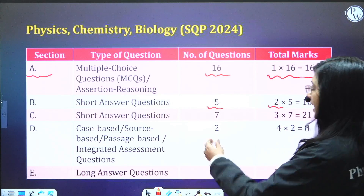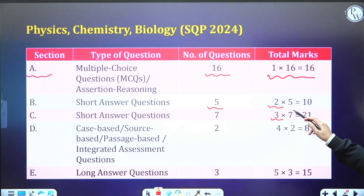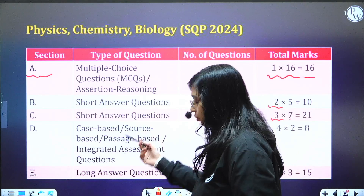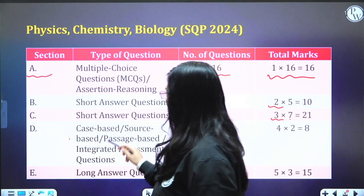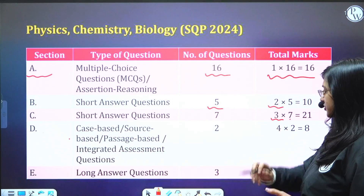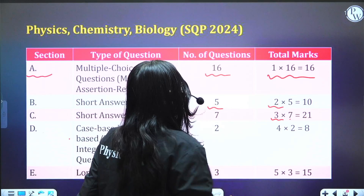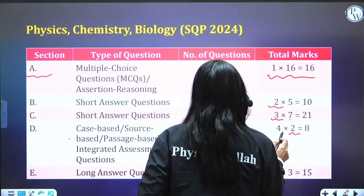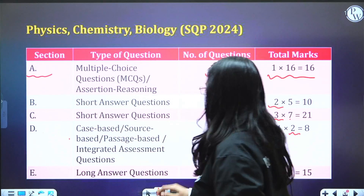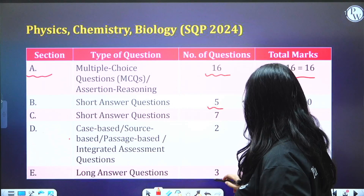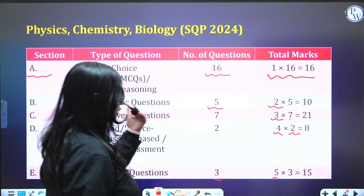For short answer questions, there are 15 total: five two-marker questions and seven three-marker questions. Part D consists of case-based, source-based, or passage-based integrated assessment questions — students usually find this part quite difficult. There are two questions in Part D, each carrying four marks. Part E has three questions, each carrying five marks. That covers the question pattern for Physics, Chemistry, and Biology.